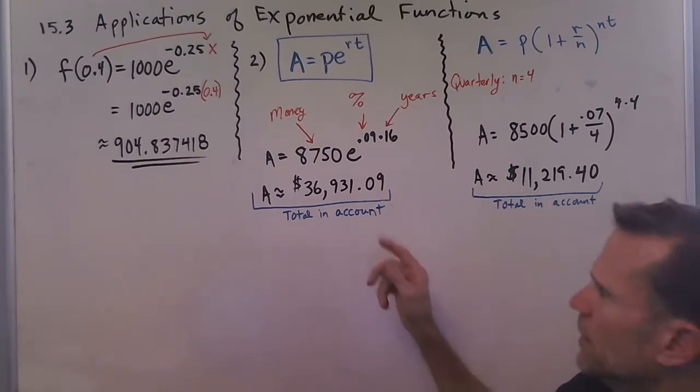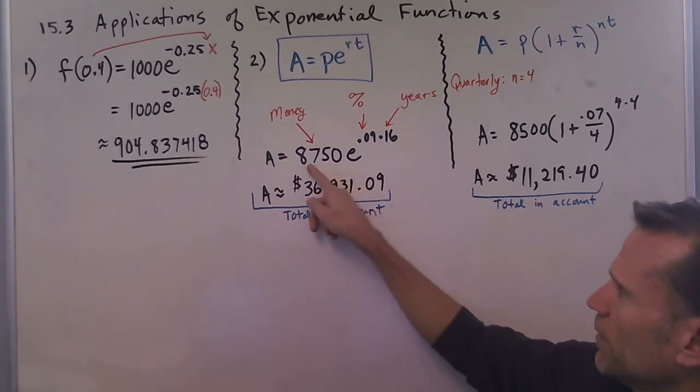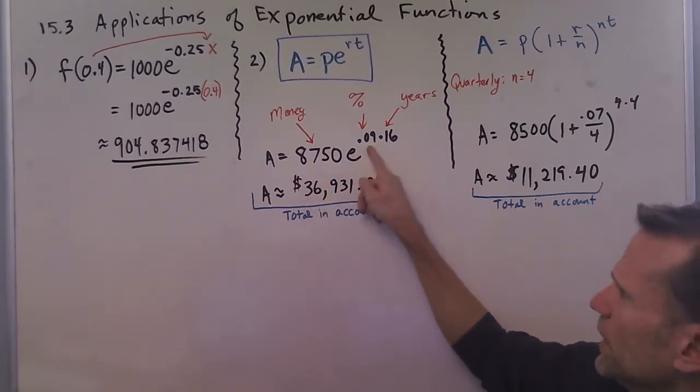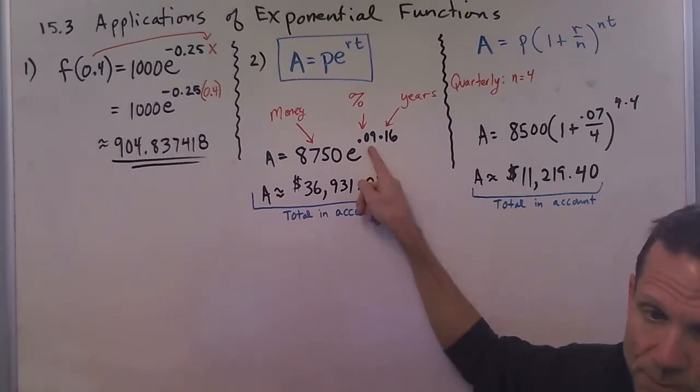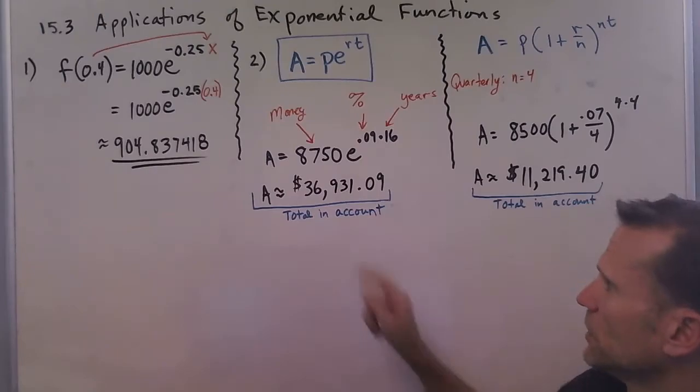So I put in our values here that are given in the problem: $8,750, 9% (make sure you change your percent to a decimal properly), and 16 years. We type this into our calculator and come up with this. Now be careful.